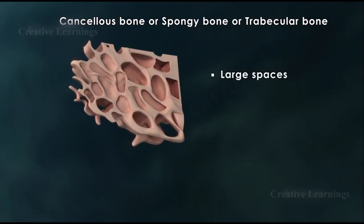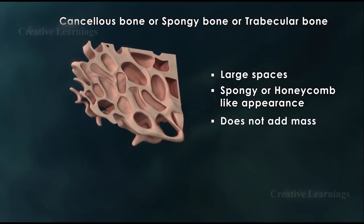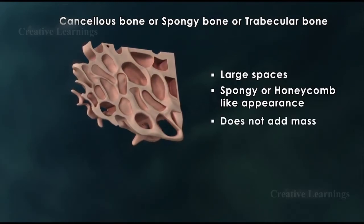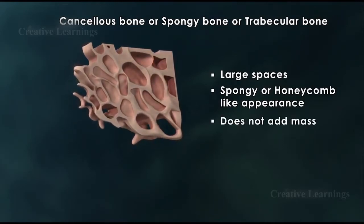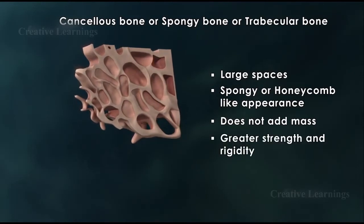This layer is filled with numerous large spaces, giving it a spongy or honeycomb-like appearance. The porous nature of the spongy bone does not add mass to the overall structure but still provides greater strength and rigidity.